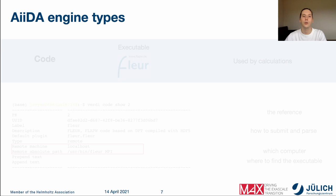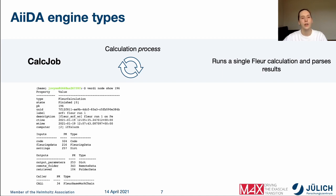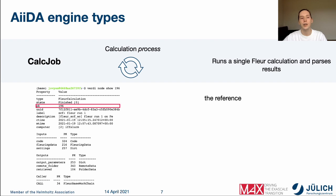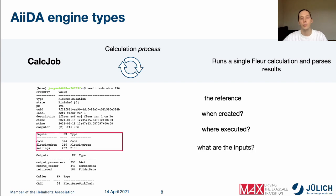Now that we have the configured code, it's time to think about how the calculation process is defined in Floor. There is a CalcJob object implemented in AIDA which represents the fact that a single calculation was submitted, executed, and parsed — for example, a single Floor calculation or an inp.gen calculation. Looking at a single CalcJob node, we have information confirming it was a Floor calculation, the reference name, PK and UUID, creation time, on which computer it was executed, what the inputs were, and what outputs were produced.